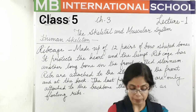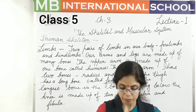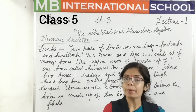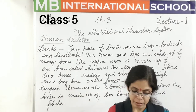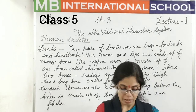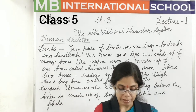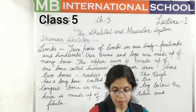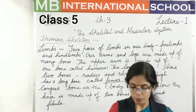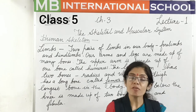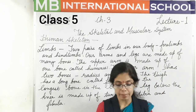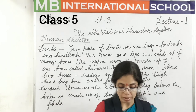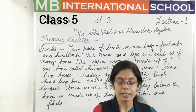Next is limbs. There are two pairs of limbs in our body: forelimbs, which are the arms, and hind limbs, which are the legs. Our arms and legs are made up of many bones. The upper arm is made up of only one bone called the humerus. The lower arm has two bones: the radius and the ulna.